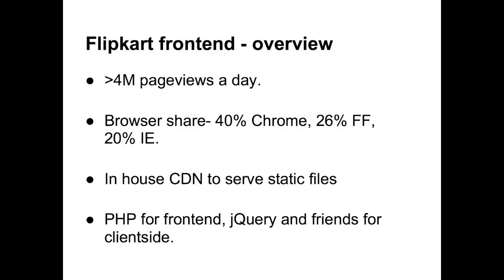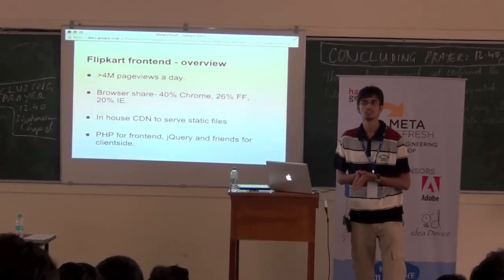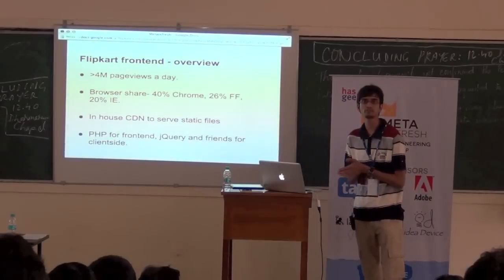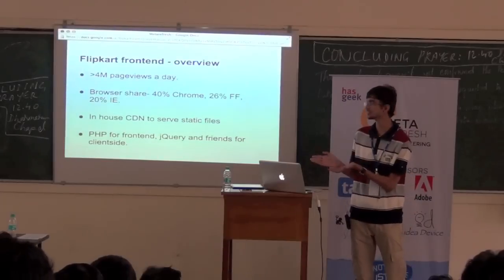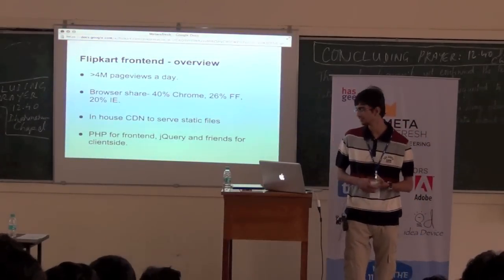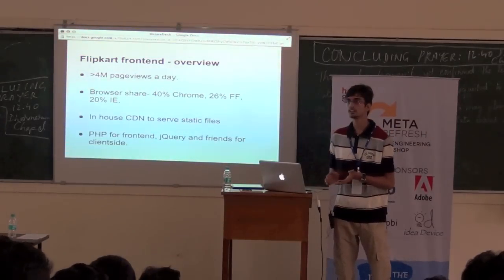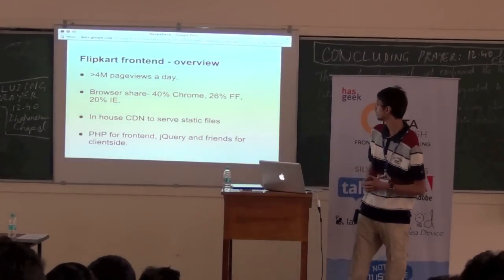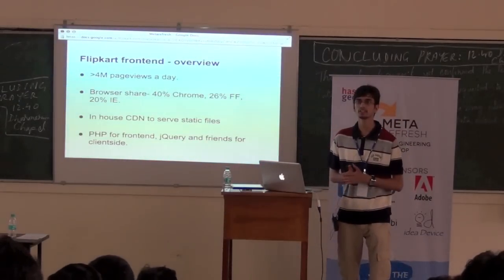Just an overview of Flipkart frontend before we get started. We do more than 4 million page views a day. 40% comes from Chrome, 26% is Firefox, 20% is IE — all IEs — and 16% is IE specifically. Very little of IE6 and IE7. We use an in-house CDN to serve static files, PHP for frontend serving, and jQuery and its plugins as our client-side framework.